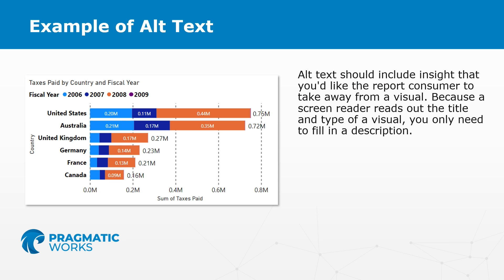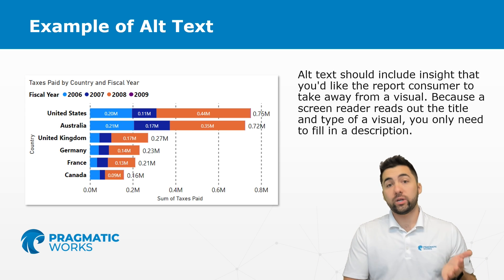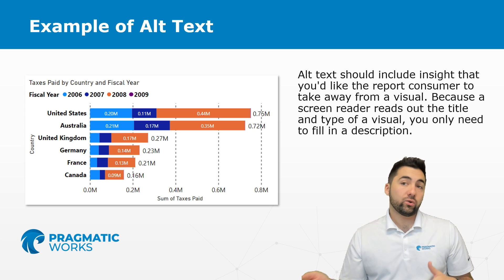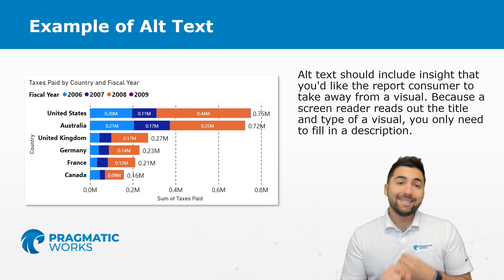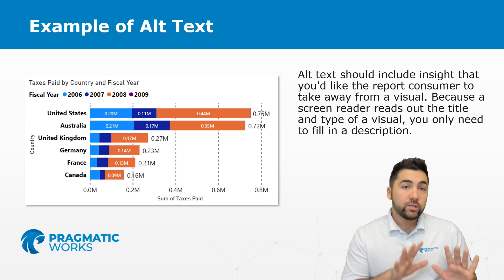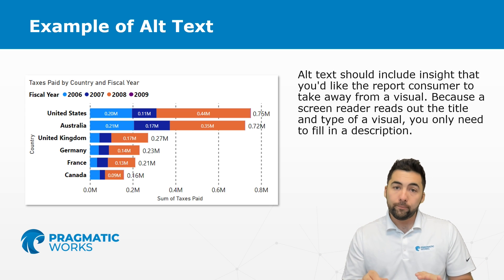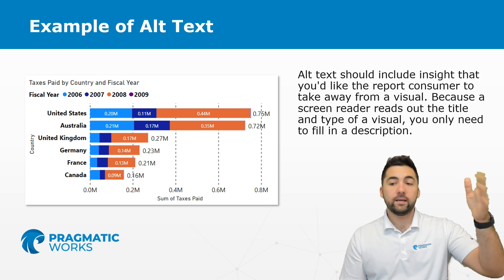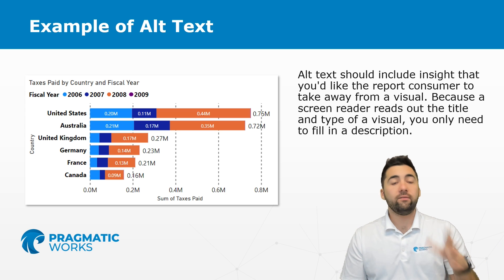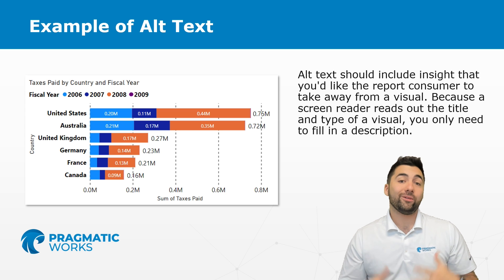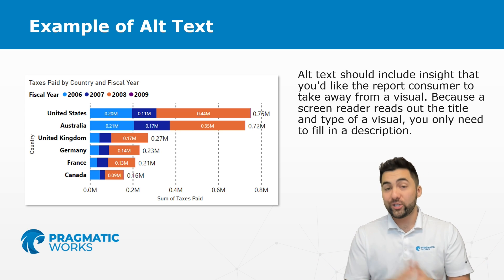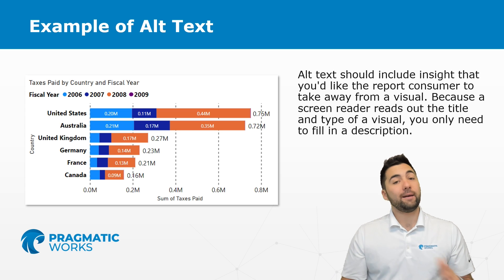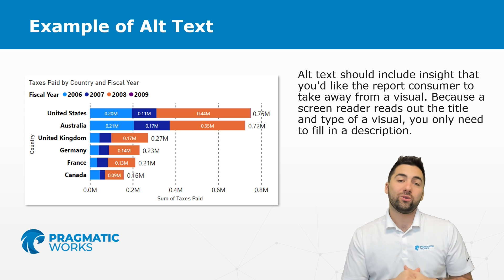Here's an example — this is taxes paid by country during each fiscal year. Alt text really should include the insight you want the report consumer to take away from the visual. Because a screen reader is already reading the title and other header information, you really just need to fill in a proper description. I'm going to show you a couple of extra tips and tricks to make alt text a part of your report design.